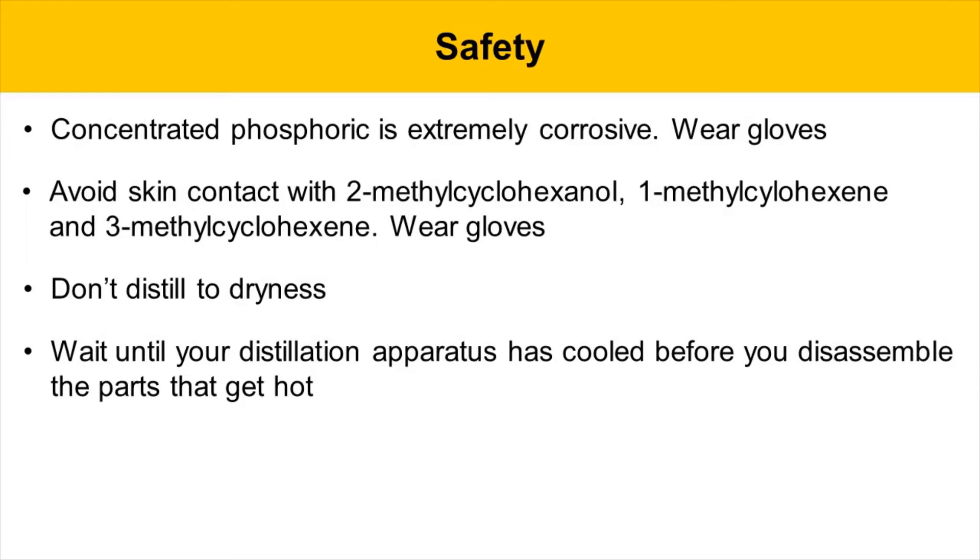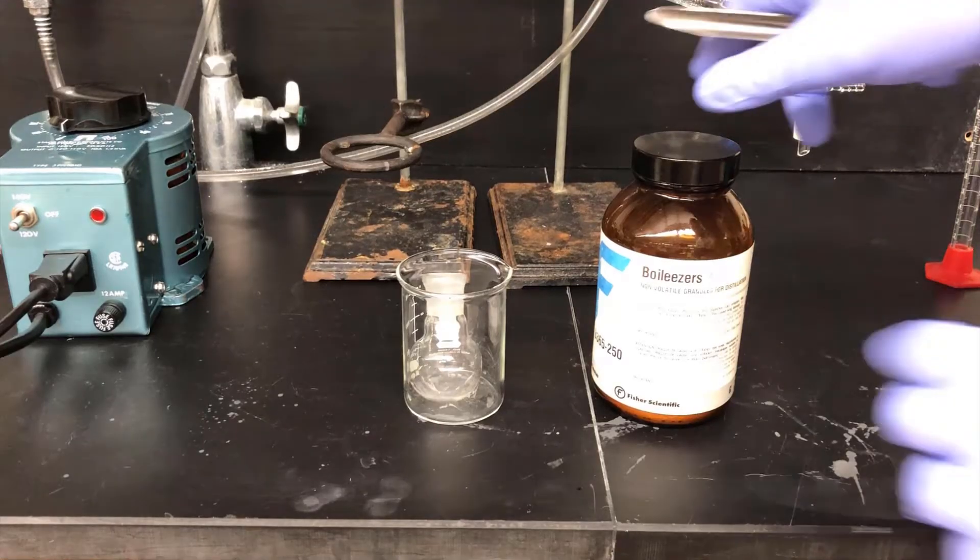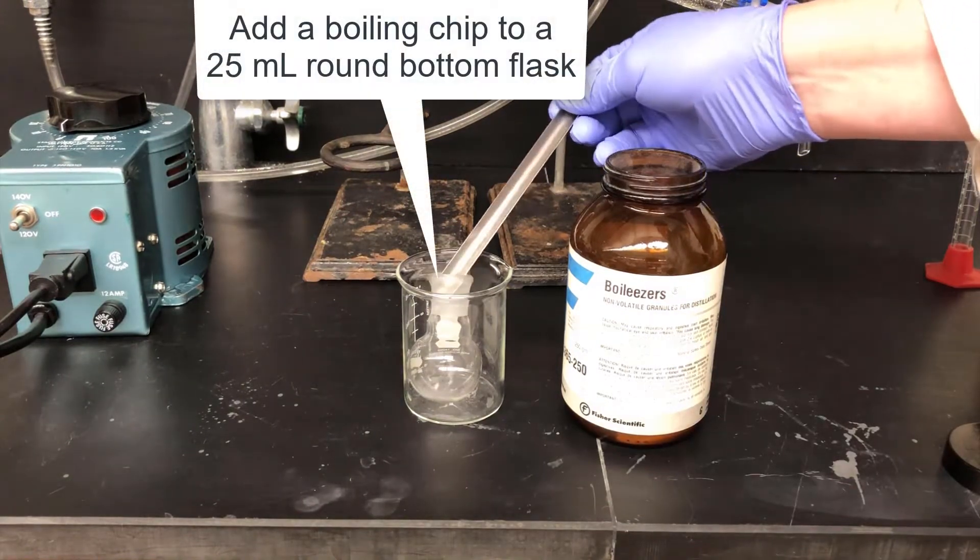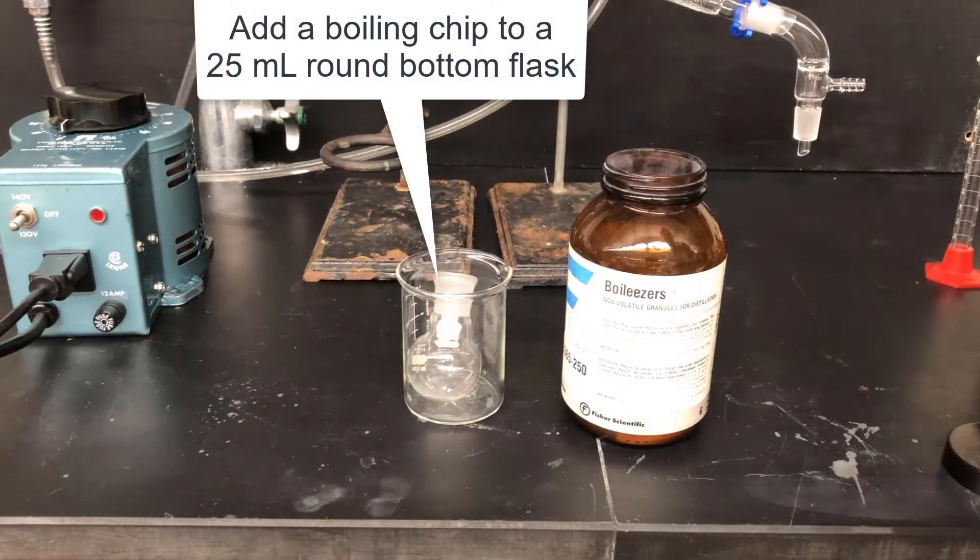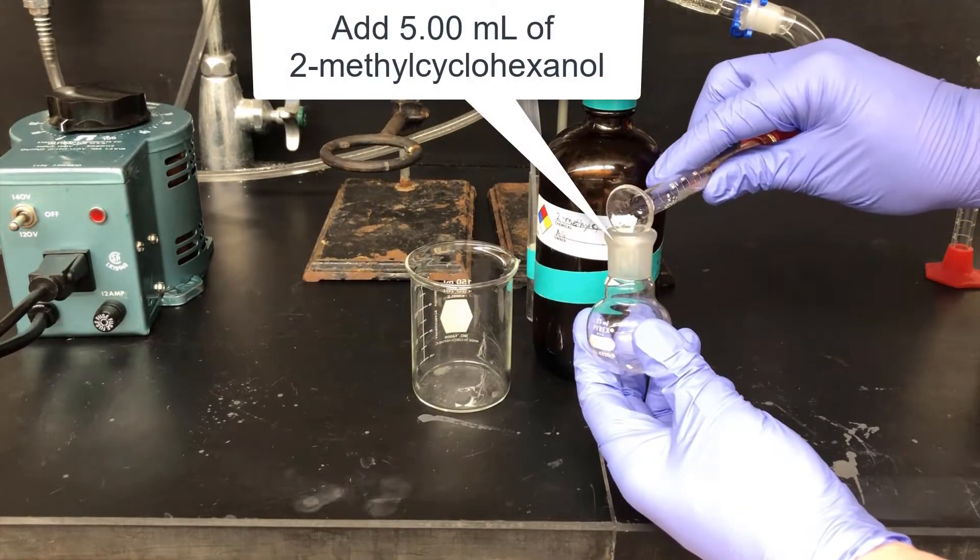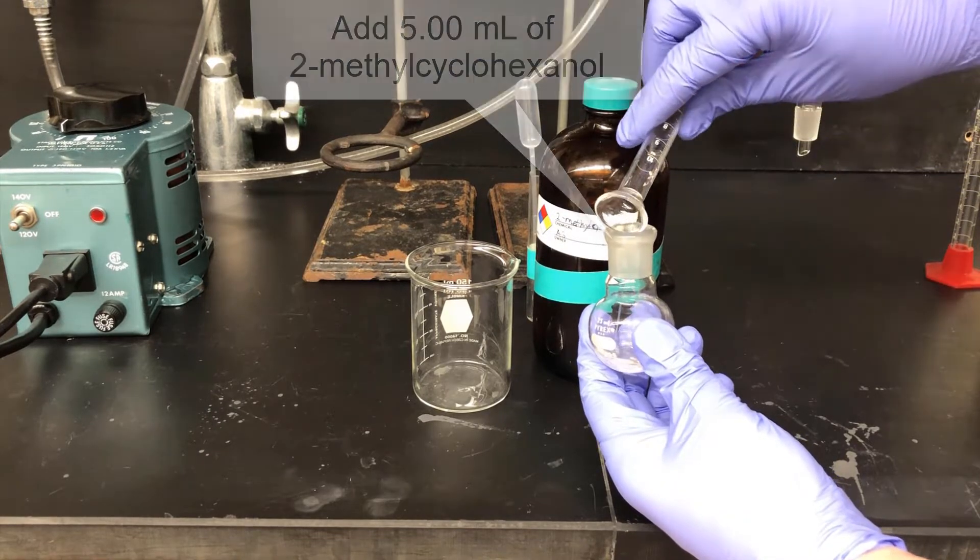The experiment will start with a 25-milliliter round-bottom flask, and you put one or two boiling chips inside that flask. We're going to boil some liquids today, and this is going to help smooth out the boiling. Next, we'll add 5.00 milliliters of 2-methylcyclohexanol. This is the liquid reagent in today's experiment.